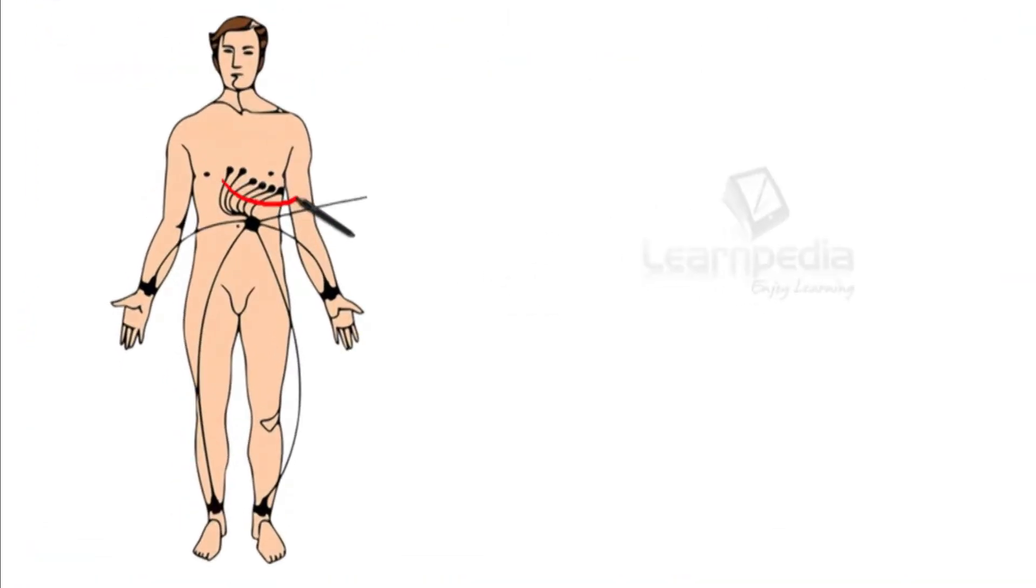So here you can see there are 6 chest leads, they are named as V1 to V6 and they are present on specific positions on the ribcage. Then you have 4 limb leads, 2 on the arms and 2 on the legs.